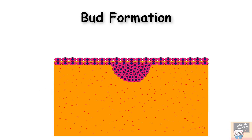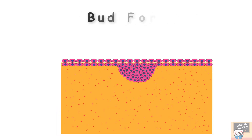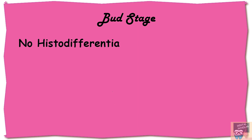This results in bud formation, which marks the beginning — or initiation — of tooth formation. The bud stage is established by increased proliferation in the dental lamina, and in the enamel organ there is no histodifferentiation, meaning all cells in the enamel organ at the bud stage appear the same.